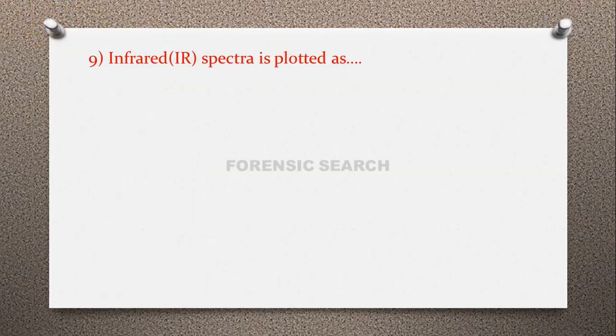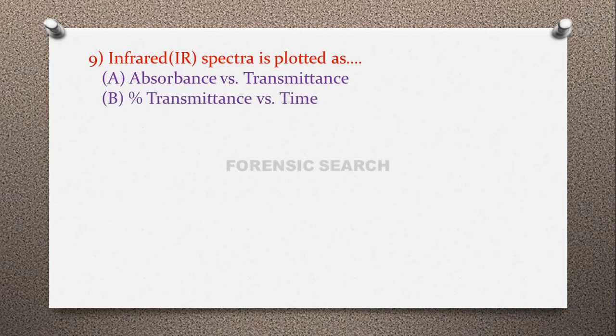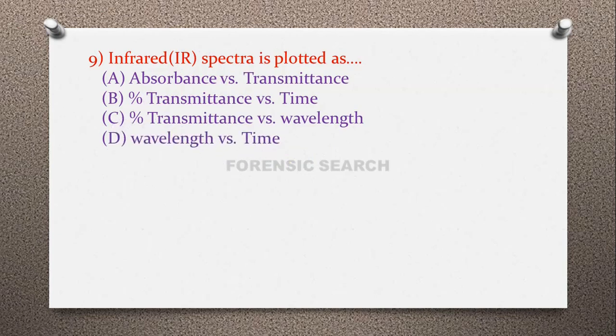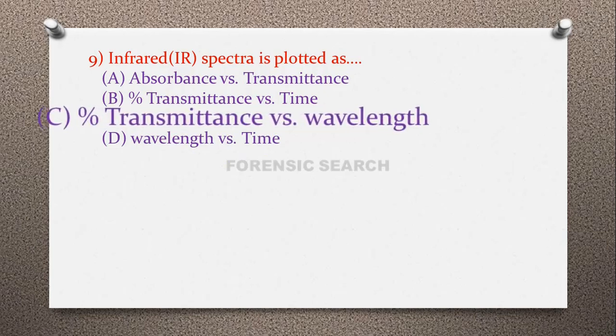Question 9: IR spectra is plotted as — option A: absorbance versus transmittance, option B: percentage transmittance versus time, option C: percentage transmittance versus wavelength, option D: wavelength versus time. The correct answer is option C — percentage transmittance versus wavelength.